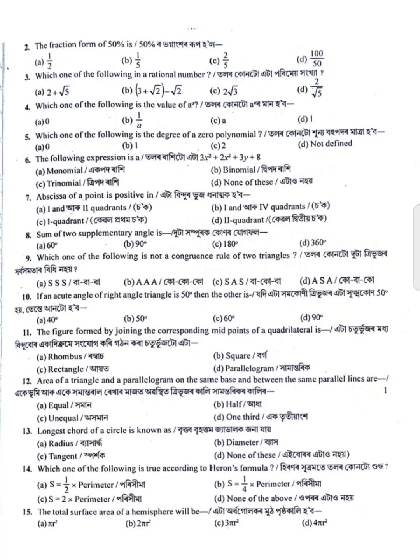Number three: which one of the following is irrational? The answer is two plus root five. Number four: which of the following is the value of a to the power zero? The answer is one, so D is correct. Number five: which of the following is the degree of the zero polynomial?